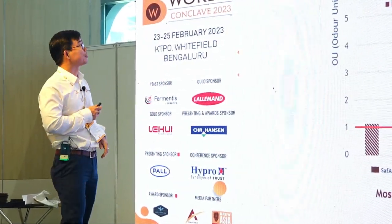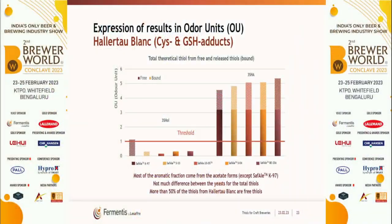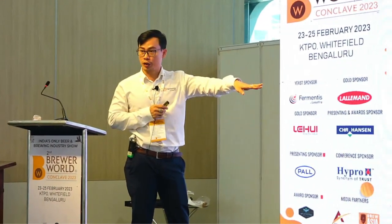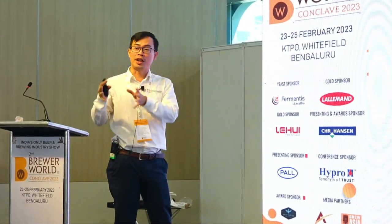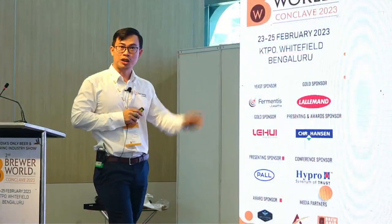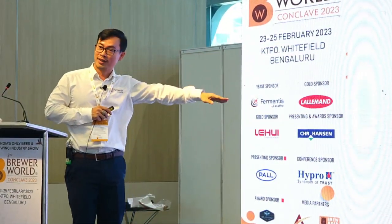For Hallertau: K97 can help you get a bit more thiol — higher than the other yeasts. It released some bound-form thiols as well. However, the other unit values are lower than Citra overall. The conclusion: most aromatic fractions from Hallertau also come from the acetate form; not much difference between yeasts for total thiols, but more than 50% of the thiols from Hallertau are already free.